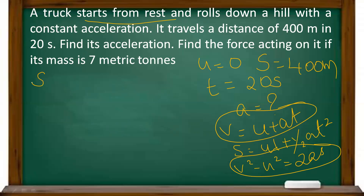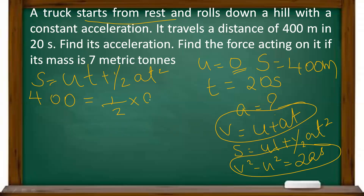So s is equal to ut plus half at squared. Substituting values: s is 400, u is 0 so the first term is 0, giving 400 equals half into a into t squared. t is 20, so 20 squared is 400. Cancelling 400 on both sides, a is equal to 2 meters per second squared.